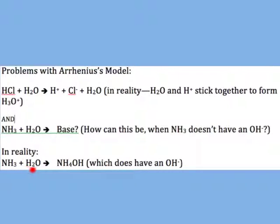What actually happens is that NH₃ and H₂O form a compound called ammonium hydroxide, which, as you can see, does have a hydroxide ion. Unfortunately, Arrhenius' model doesn't account for those things, and therefore we say that it has limitations.